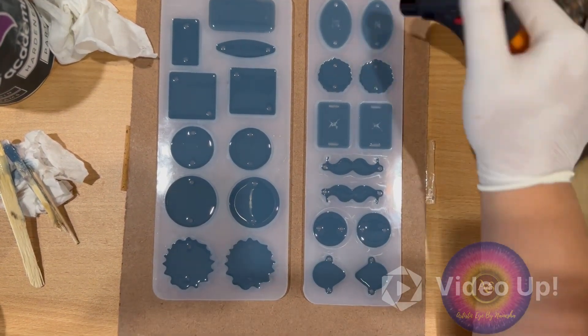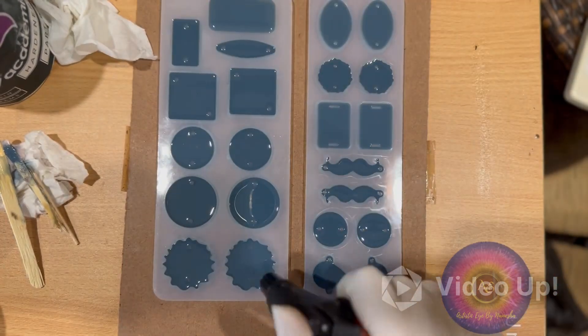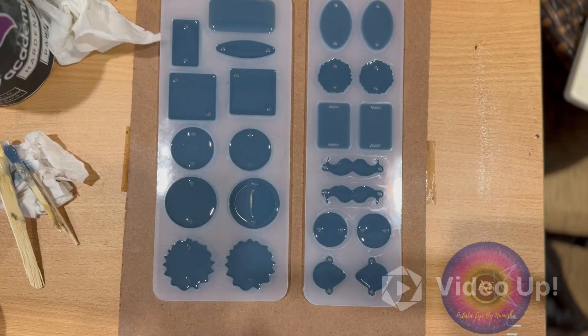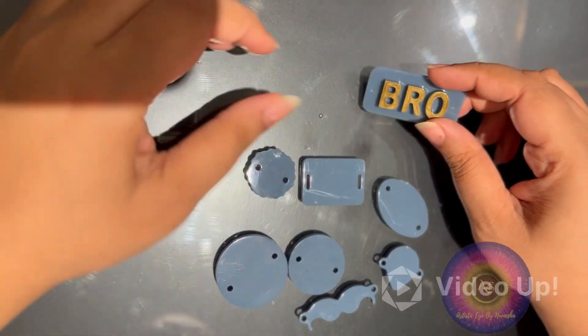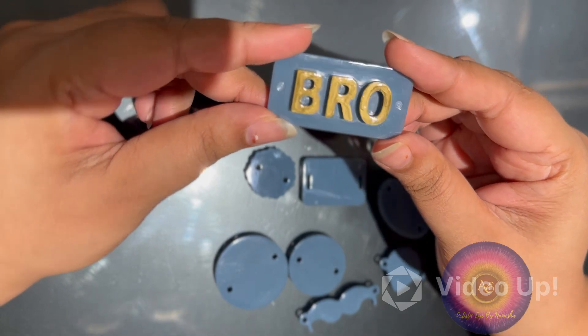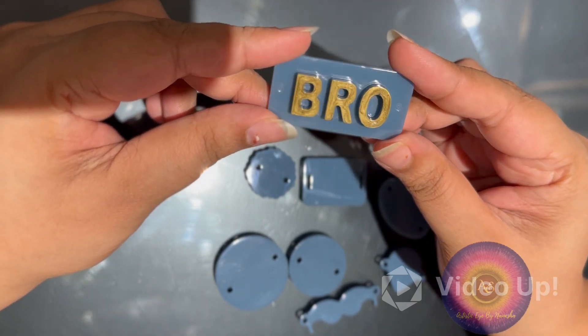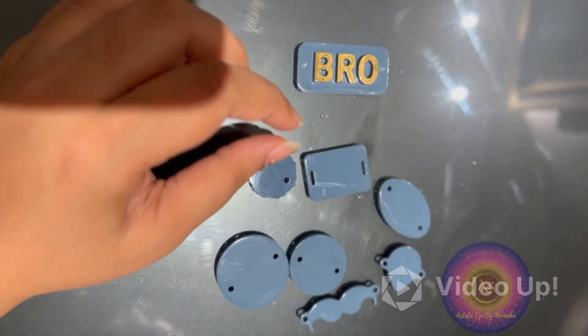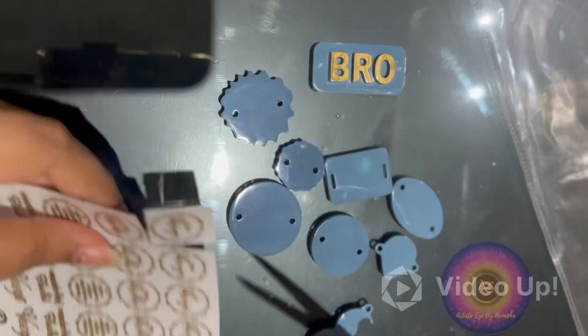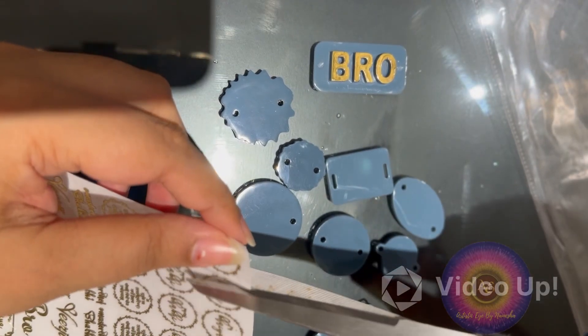Giving a last blowtorch, and here's the result after 24 hours. These are the rakhis that have totally cured and looking really nice. I colored these letters BRO with a golden pen, and I'm going to stick the stickers now.